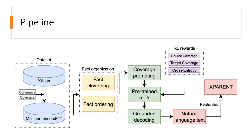This figure describes the overall pipeline used in our work. Starting with the X-Line dataset, we construct a multi-sentence cross-lingual fact-to-text generation dataset by concatenating sentences. Coverage and coherence metrics are used to create training and testing splits. Next, we come to fact organization, which involves fact clustering — grouping different facts together — and fact ordering, which is deciding the order of these fact clusters. Following fact organization, coverage prompts are added to our input to inform the model of the quality of the reference available.